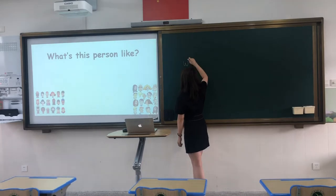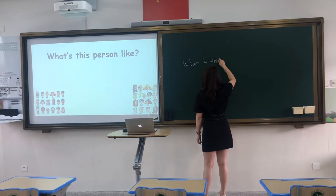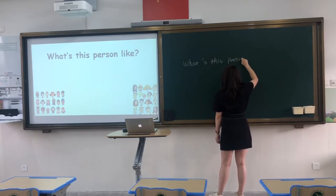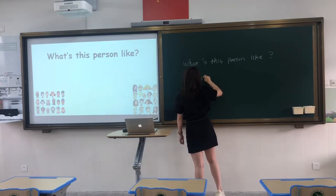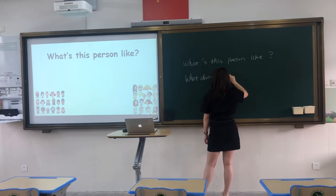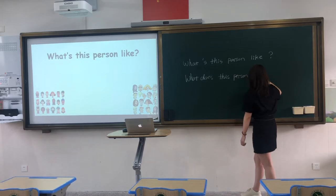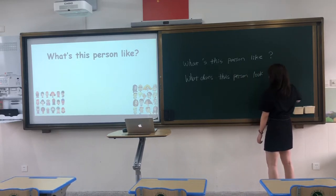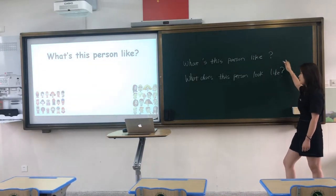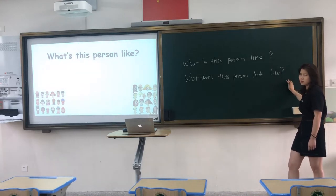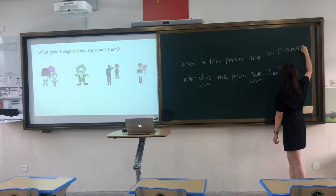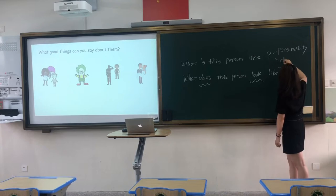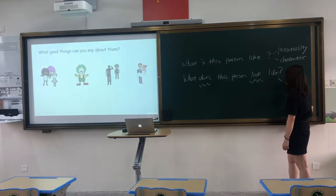Let's see the question. Let's see these two different characteristics. What's this person like? And what does this person look like? What's the difference between them? 'What's this person like?' is about people's personality and character. 'What does this person look like?' is about people's appearance.